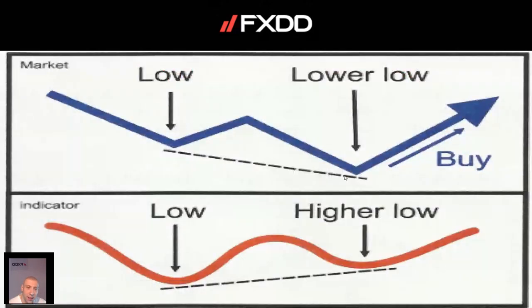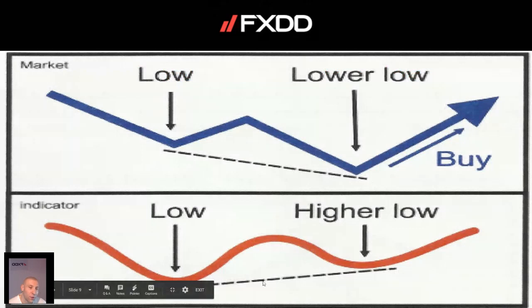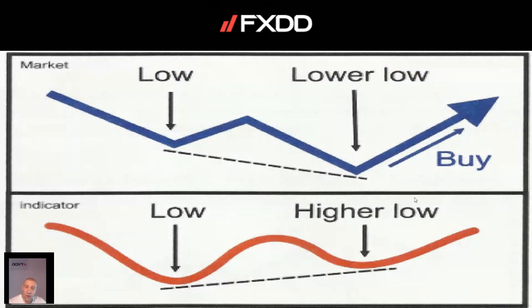This is how it looks. This is the price and this is the indicator. The price made a lower low while the indicator made a higher low — you have a form of a triangle. Price is making a lower low while the indicator, at the same time, is making a higher low. It's very important that both market and indicator need to be in alignment: when the market makes a lower low, you need to spot a higher low on the indicator at the same spot. That is why it's always useful to draw a vertical line — I will show you that in a practical example.